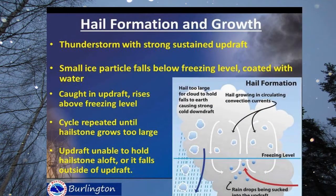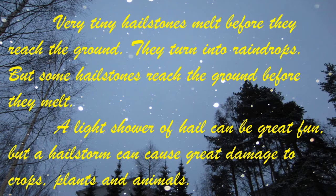Let us see how hailstones are formed. In hail formation and growth: a thunderstorm with a strong sustained updraft carries small ice particles below the freezing level, where they get coated with water, are caught in the updraft, and rise above the freezing level again. This cycle is repeated until the hailstone grows too large for the updraft to hold, or it falls outside of the updraft. Very tiny hailstones melt before they reach the ground, turning into raindrops. But some hailstones do reach the ground before they melt.